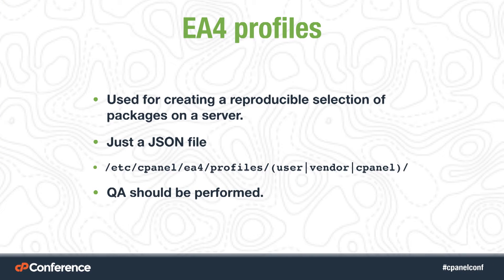The next thing we're going to talk about is EA-4 profiles. EA-4 profiles are a continuation of the idea of profiles from Easy Apache 3, used for creating a reproducible selection of packages on your server. This is so you can distribute packages and have the same configuration of Easy Apache across a fleet of servers without a lot of extra configuration management. Profiles are stored in /etc/cpanel/ea4/profiles. Under that there are three directories: user, vendor, and cPanel.